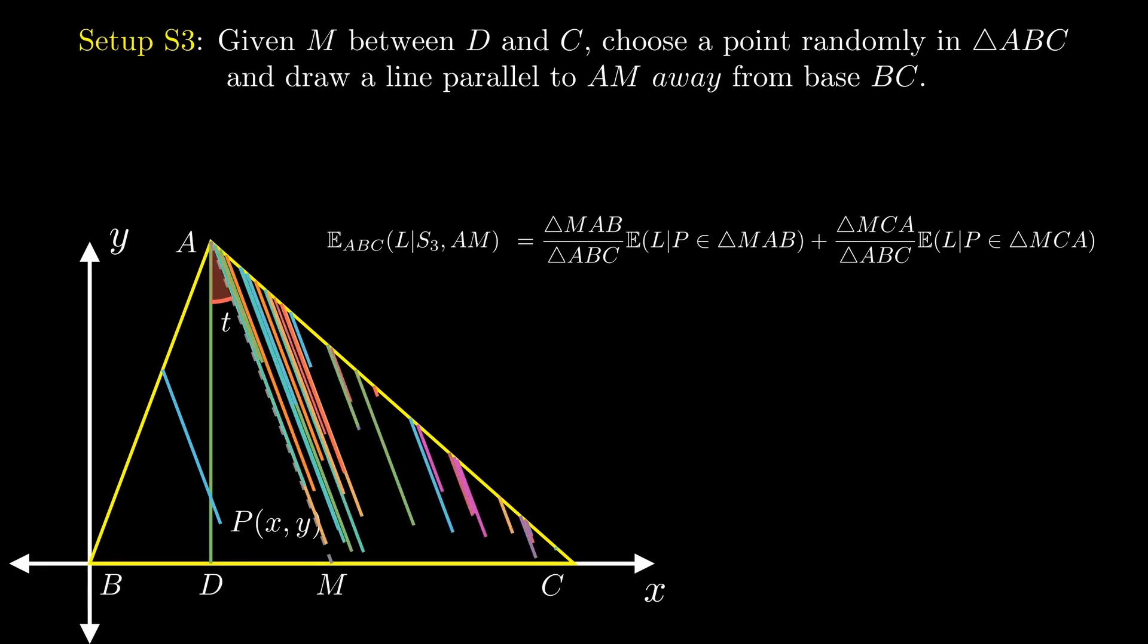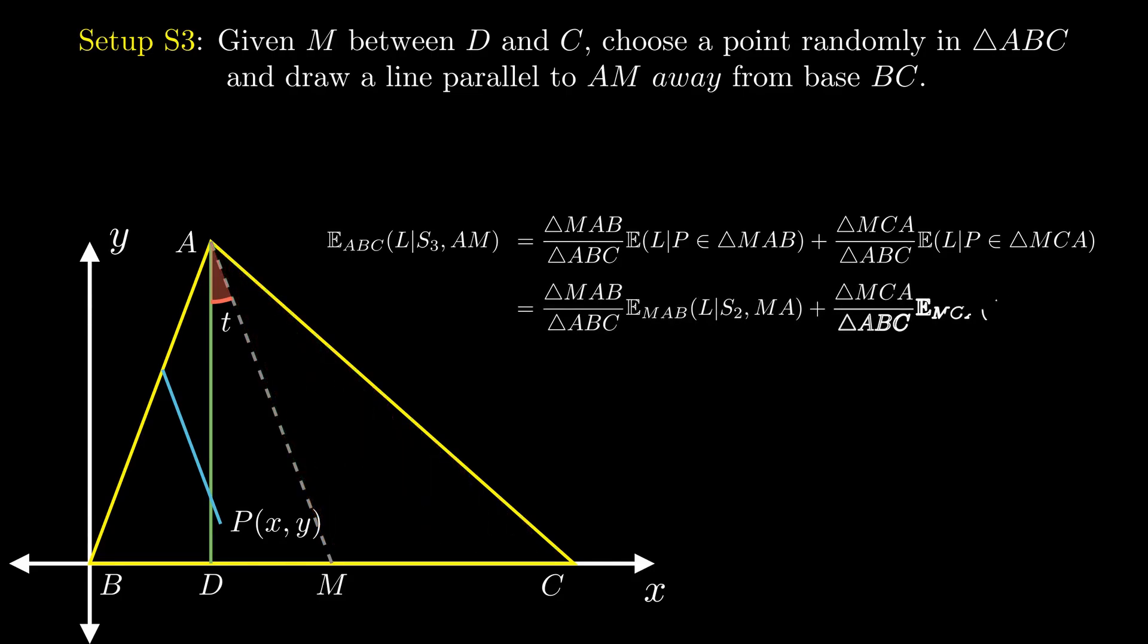Let's say the point lies inside triangle MAC. What we now want is the expected length of a line drawn parallel to MA towards side AC in triangle MCA. But this is just our second setup with the given point being one of the vertices itself. Then from the previous result, we know the expected length is AM by 3. By symmetry, the same reasoning applies to triangle MAB as well.